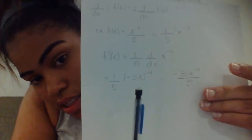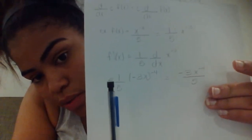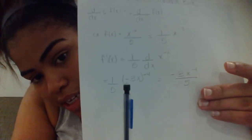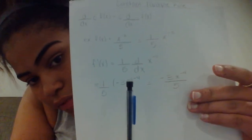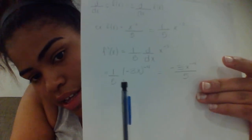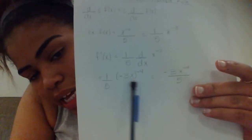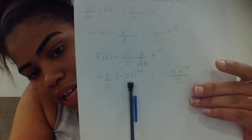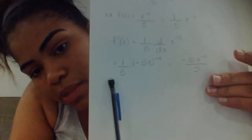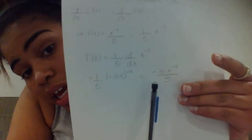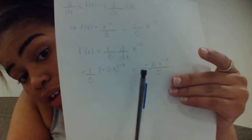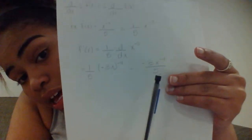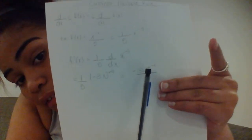Now all we need to do is multiply across. So we have negative 3x to the negative fourth power over 5. We multiplied 1 times negative 3x to the negative fourth power — and since that has a 1 under it, we multiply across and multiply 5 across — giving us negative 3x to the negative fourth power divided by 5.